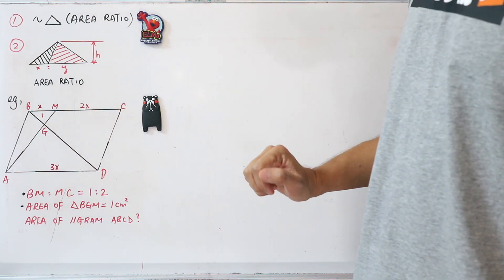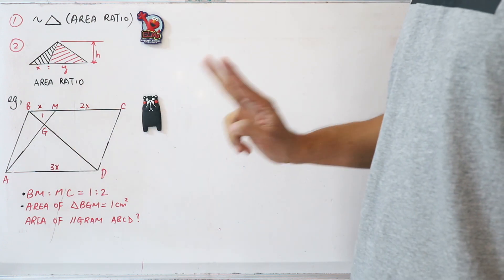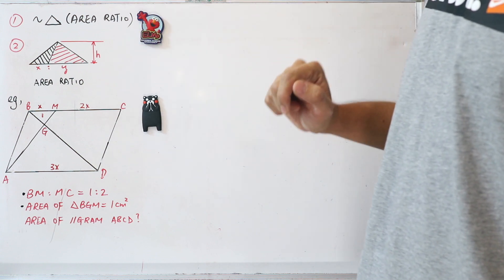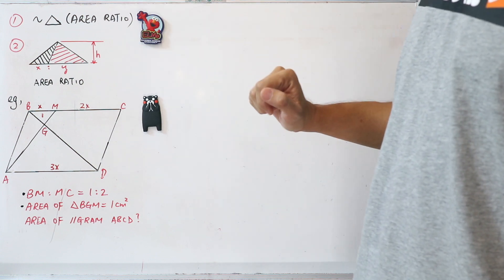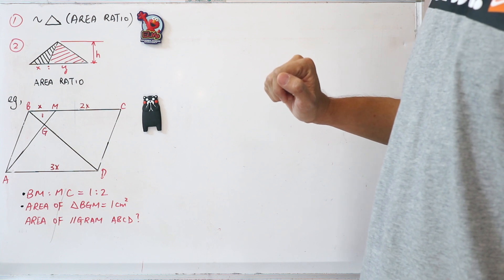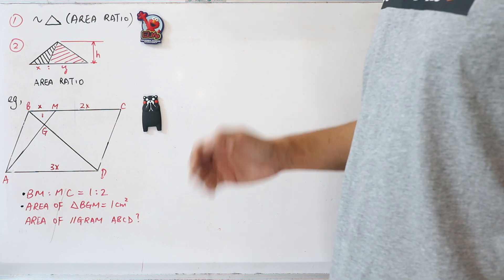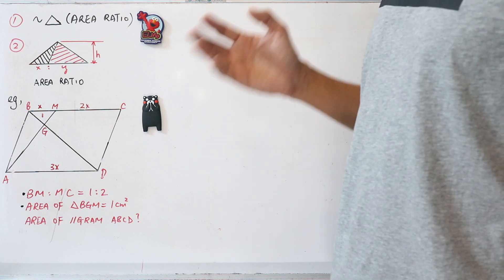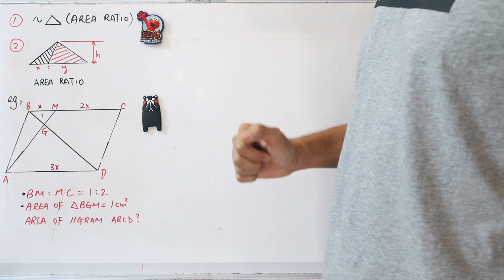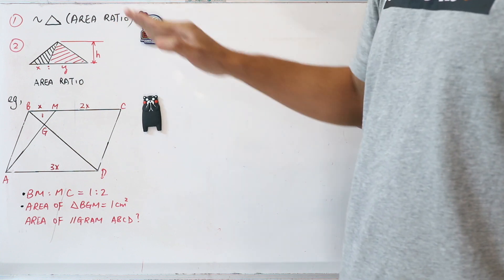So how do we tackle this kind of problem? How do I find the area of the parallelogram? There are two very important things you have to know. The first thing is you have to know how to prove two triangles are similar, because once you prove two triangles are similar, you know their sides are proportional and the ratio of their areas is the square of the length ratio.